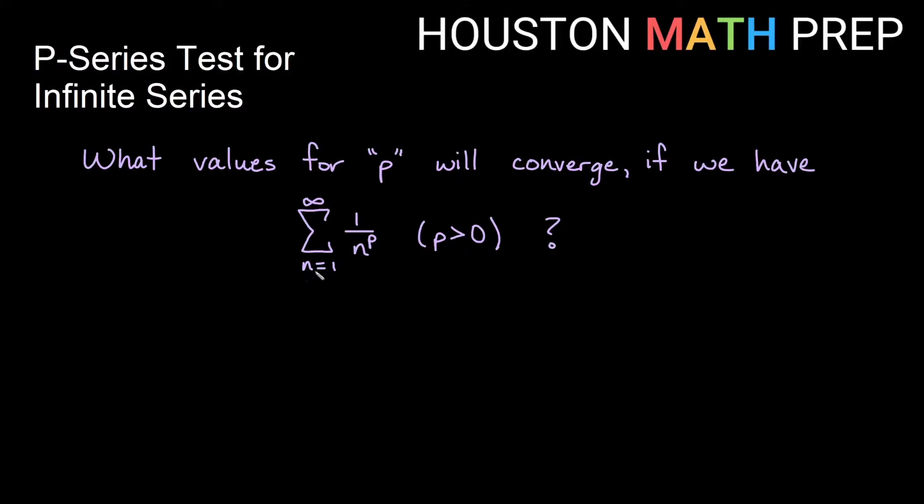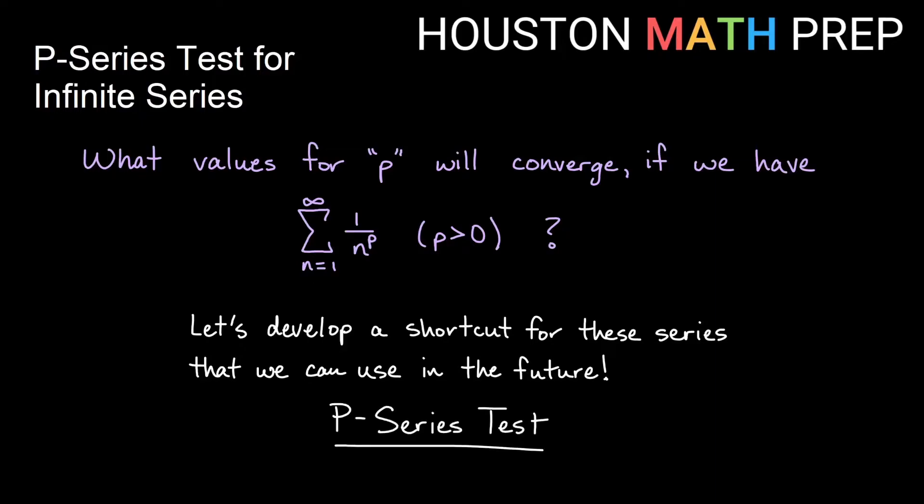Our question will be for an infinite series of the formula 1 over n to some positive power, what positive powers will make this converge and which ones will make it diverge? We want to figure out a pattern so I don't have to do the integral test every time. We're going to develop a shortcut for series that look like this that we can use in the future, and this test is called the p-series test.